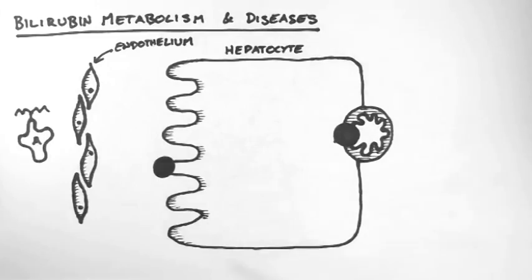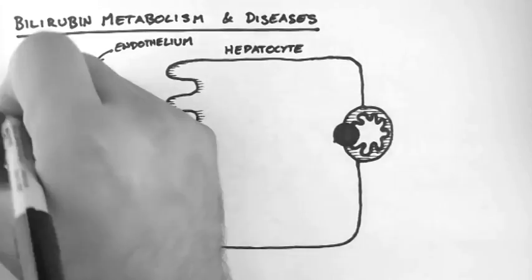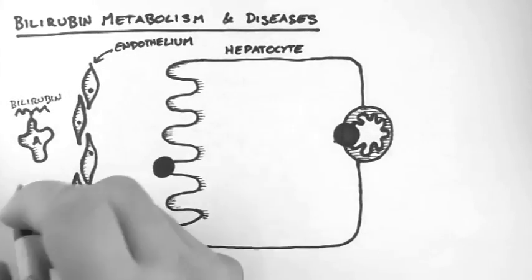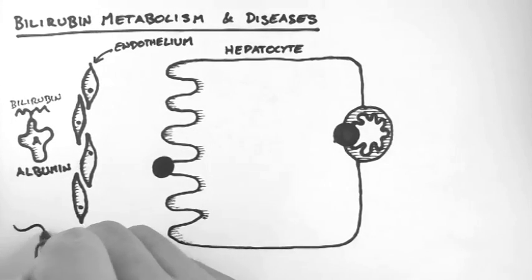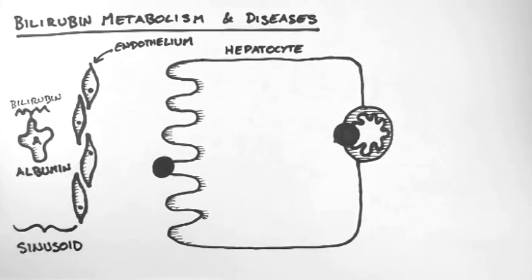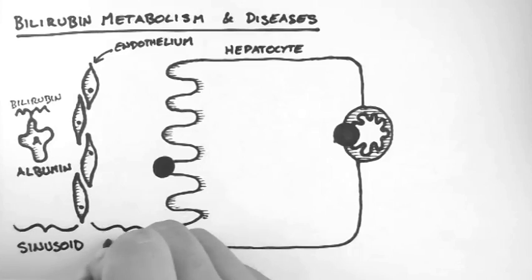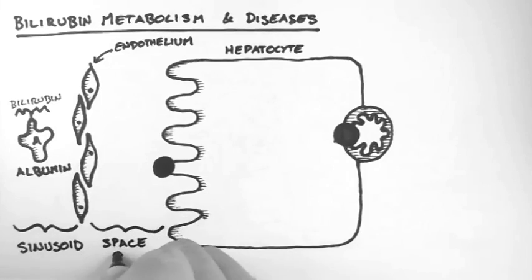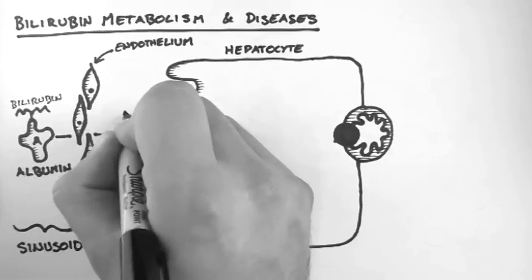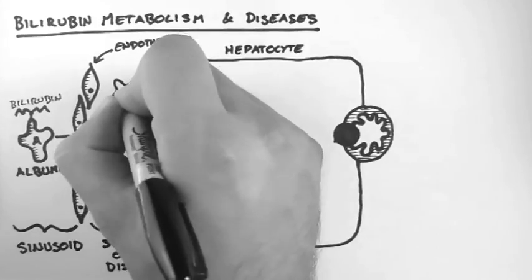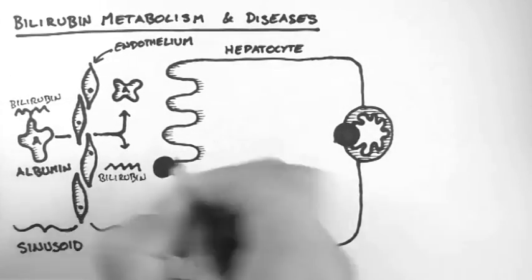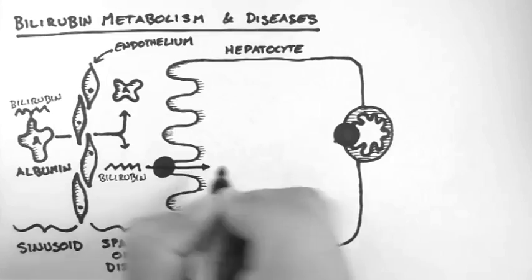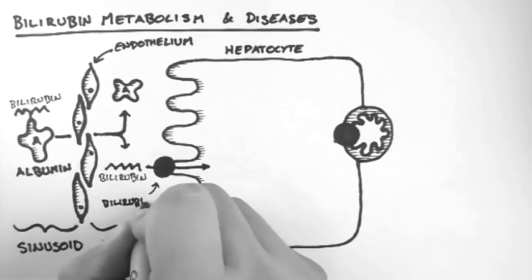In the previous video we saw how bilirubin was brought into the liver attached to albumin. The albumin travels through the sinusoids and then passes into the space of Disse. Once in the space of Disse, the albumin and the bilirubin dissociate and the bilirubin moves into the hepatocyte via a bilirubin transporter.